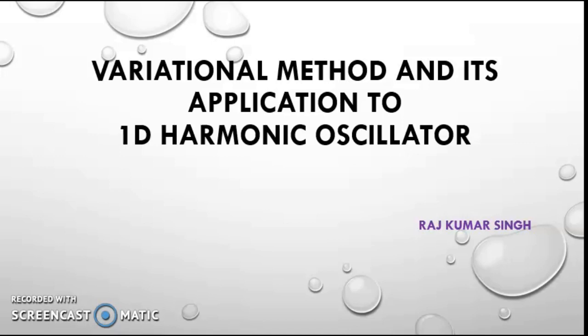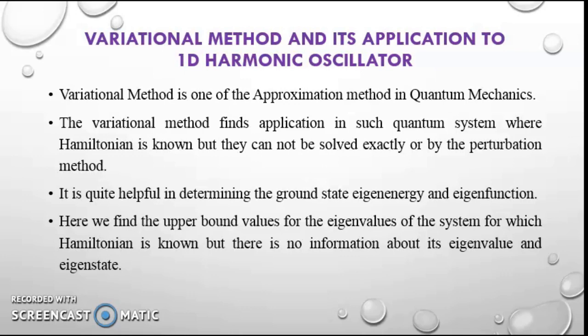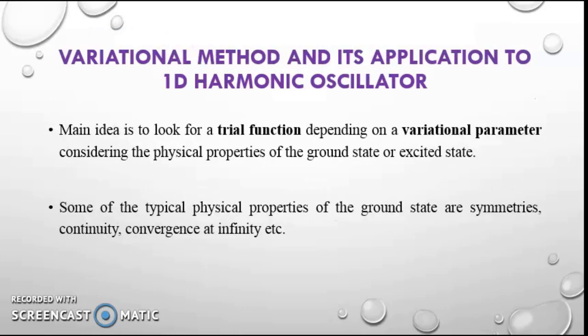The variational method is one of the approximation methods in quantum mechanics. It finds application in quantum systems where the Hamiltonian is known but cannot be solved exactly or by the perturbation method. It is quite helpful in determining the ground state energy and eigenfunction. Here we find the upper bound values for the given eigenvalues of the system for which the Hamiltonian is known but there is no information about its eigenvalue and eigenstate.